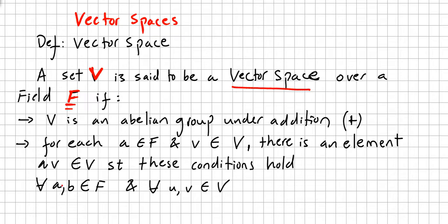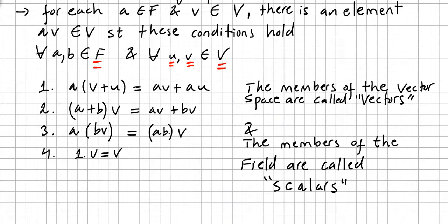These conditions hold for all A and B in the field and for all U and V in the set, or in the abelian group. The conditions are: A(V + U) = AV + AU; (A + B)V = AV + BV; A(BV) = (AB)V — so they are associative — and 1 times V equals V.